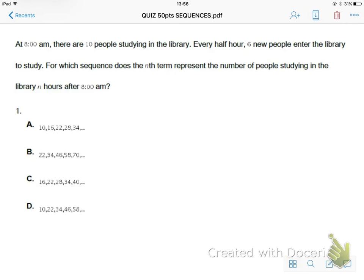At 8 a.m., there are ten people studying in the library, and every half hour, six new people enter the library to study. For which sequence does the nth term represent the number of people studying in the library n hours after 8 a.m.? So let's break this problem down and just understand what's going on here. Your first term in the sequence is going to be ten, and it tells you that at the beginning of the problem. It says at 8 a.m., there are ten people studying in the library, so you know that's your first term.